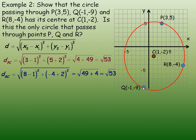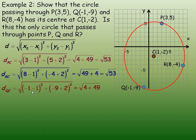One more point, Q. The distance from Q to C: (negative 1 minus 1) squared plus (negative 9 minus negative 2) squared gives negative 2 squared plus negative 7 squared, which is 4 plus 49. That is once again the square root of 53. So all three points are the same distance from C, so they must be on the circle and C is the center.